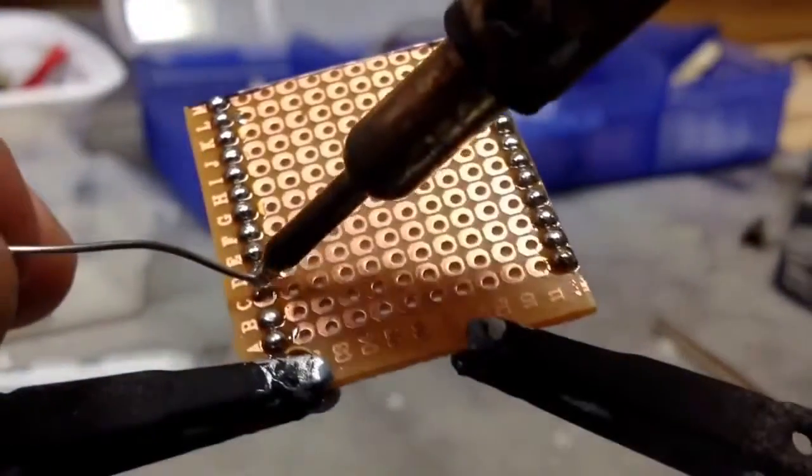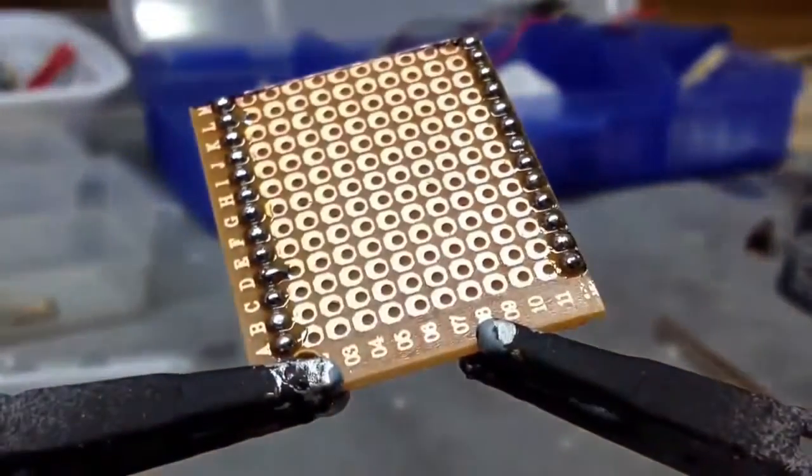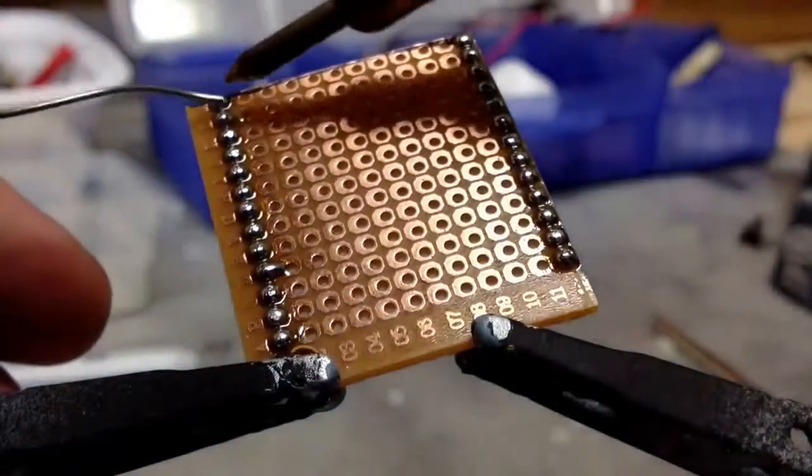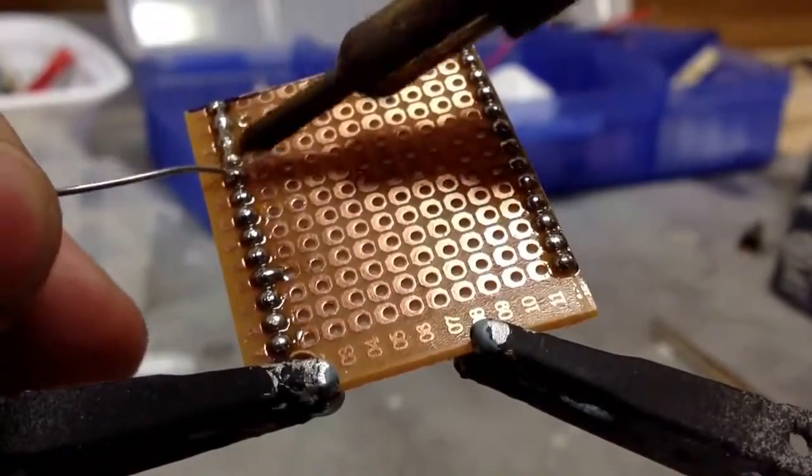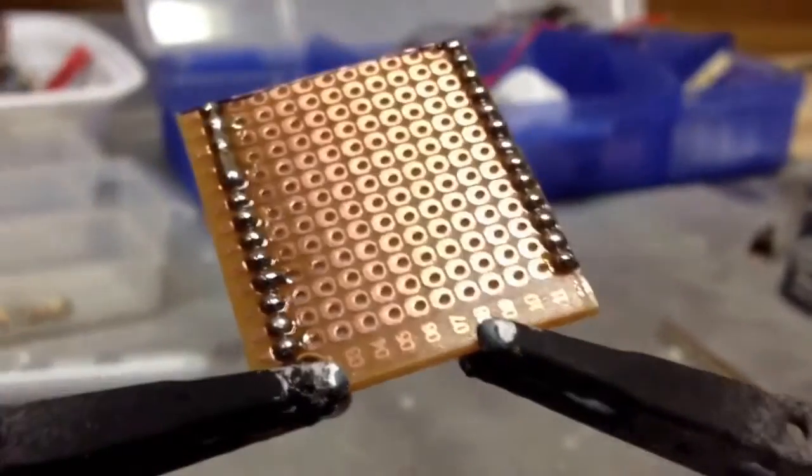As you can see, I've done these rows, but then I got to connect them, which is a bit difficult because the flux makes things flow. So you kind of got to give her a quick dab. Sometimes it works, sometimes it doesn't.